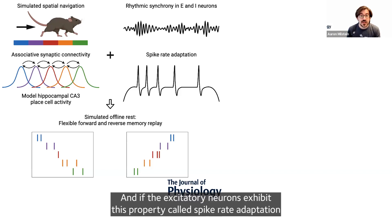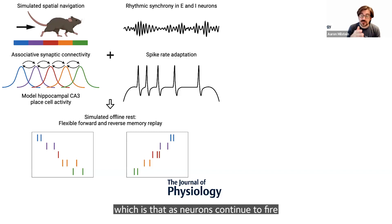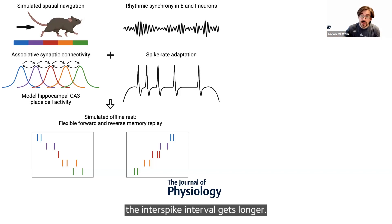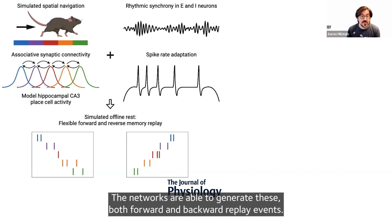And if the excitatory neurons exhibit this property called spike rate adaptation — which is that as neurons continue to fire, the interspike interval gets longer — the networks are able to generate both forward and backward replay events.